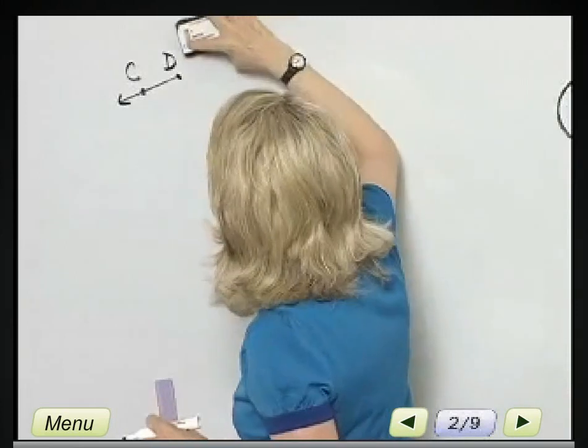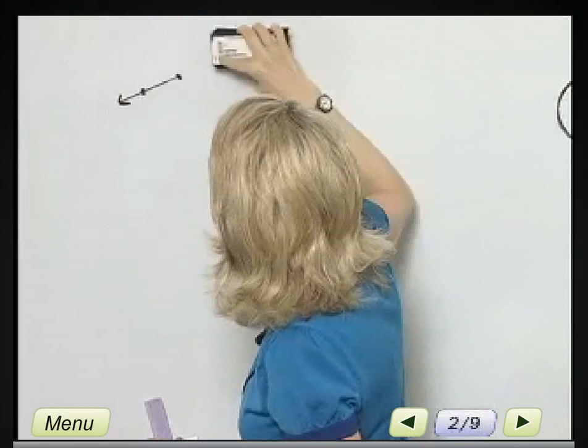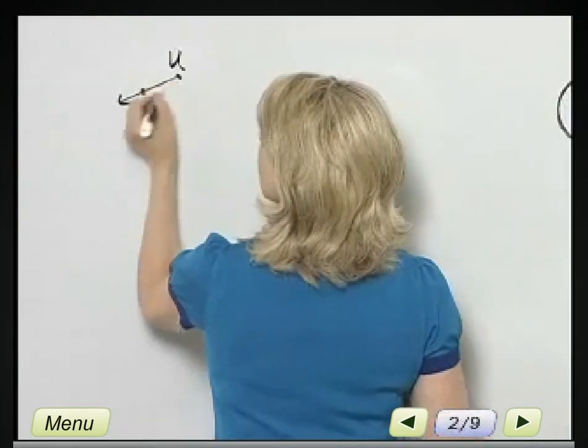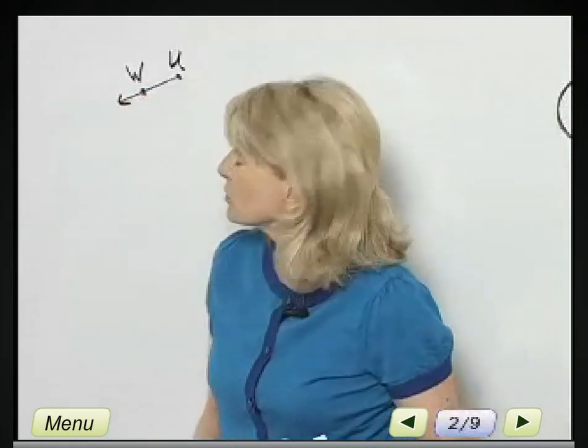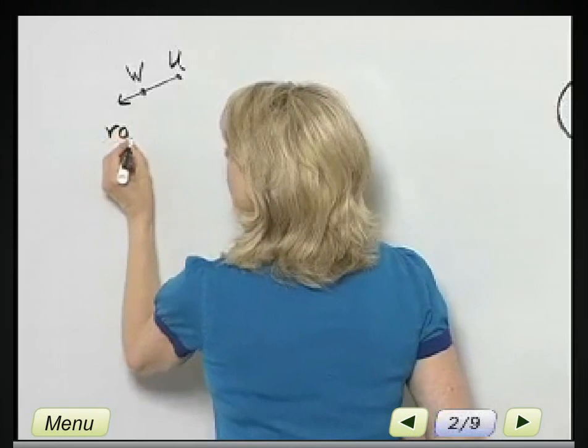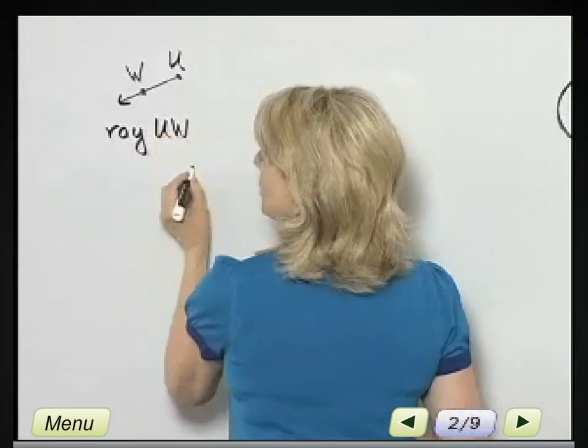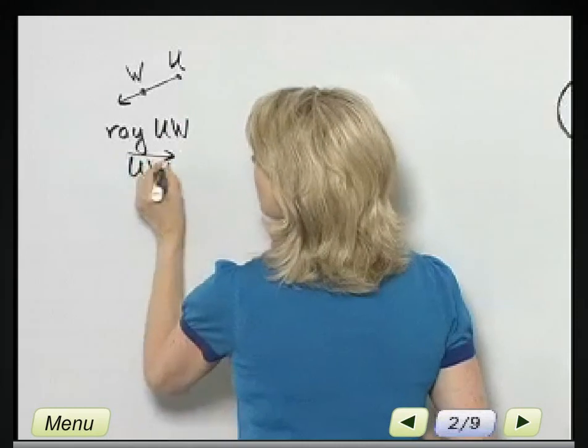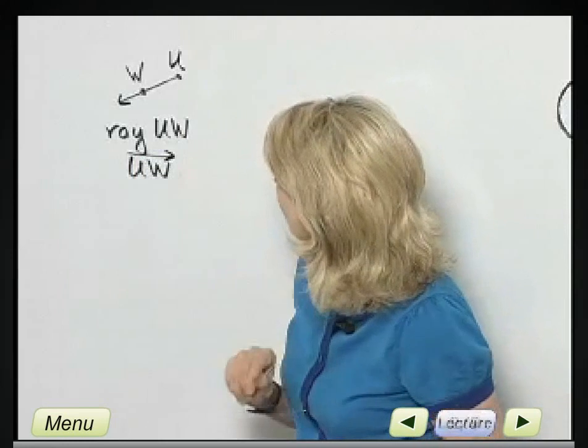Let's designate this UW, and let's talk about this U. There's my endpoint, and there's another point along the ray. This is ray UW. How can I write this down? I can write ray UW, or I can write UW with a ray sign above it, but that is an example of a ray.